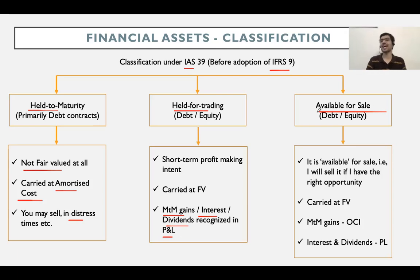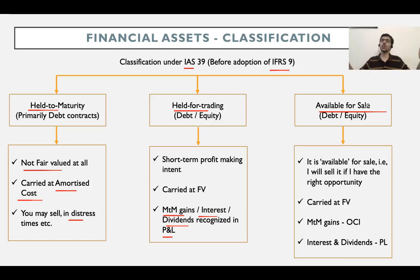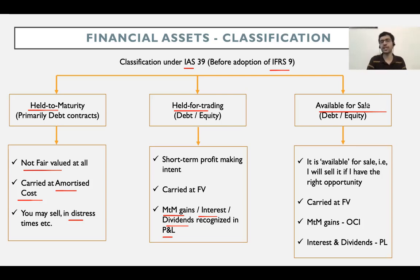The last category under IAS 39 is available for sale. Looking at the words themselves — it is something which is available for sale, meaning your intent is probably not to hold it up to its maturity, but at the same time you do not want to make short-term profits. It is available for sale, meaning if you have the right opportunity you will sell it sometime in between. These are typically instruments which are neither of the two extremes — held for trading is one extreme, held to maturity is another — available for sale is in between.